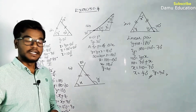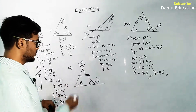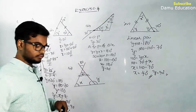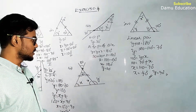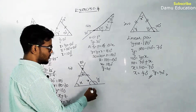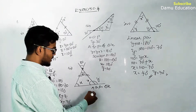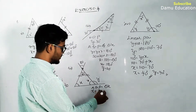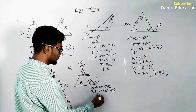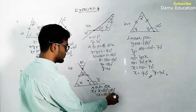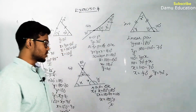For the sixth question, the angle of 80° and x are vertically opposite angles, so that angle is also 80°. The triangle is isosceles so two base angles are both x. Using the angle sum property: x + x + 80 = 180°, so 2x = 100, giving x = 50°.